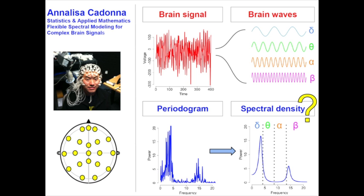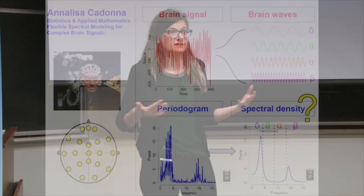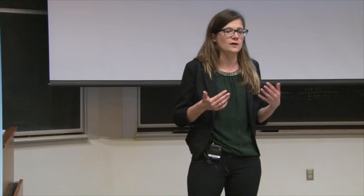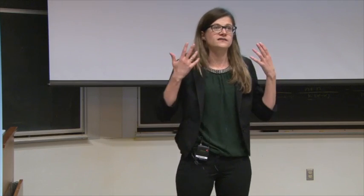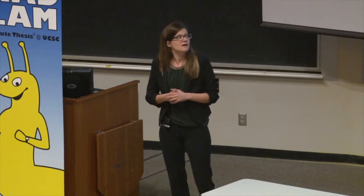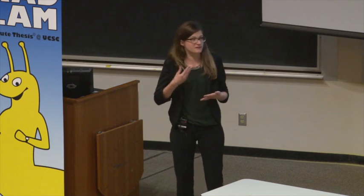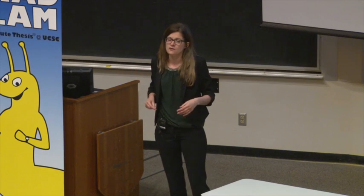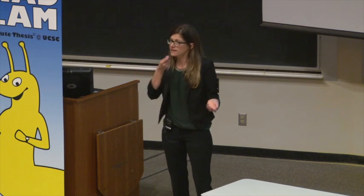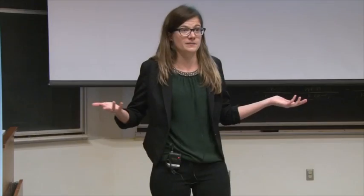The slow waves, or delta waves, occur during deep sleep. Delta waves occur when we are daydreaming or spacing out. Alpha waves occur when we are meditating, and the fastest waves, beta waves, occur when our minds are actually stimulated or challenged — for example, when we are smelling a flower, doing some math, or giving a presentation.